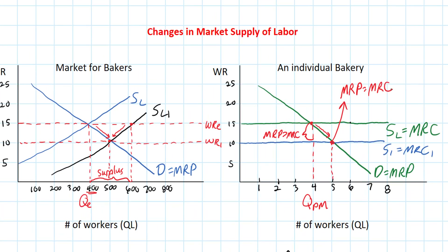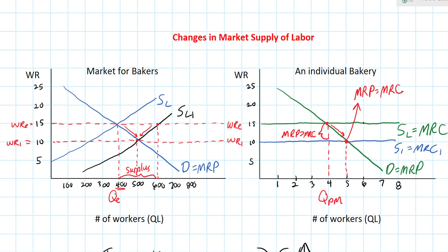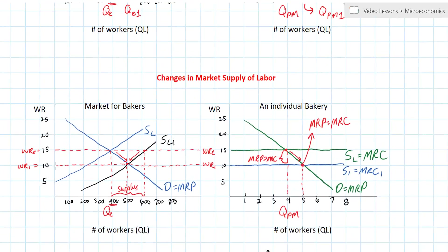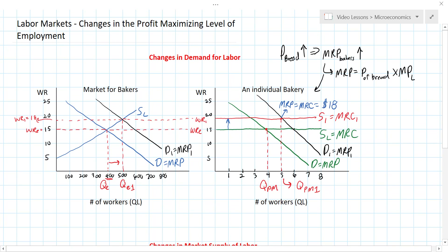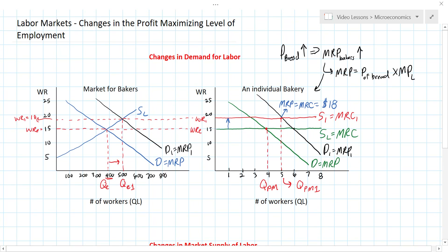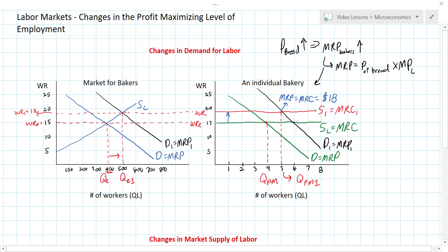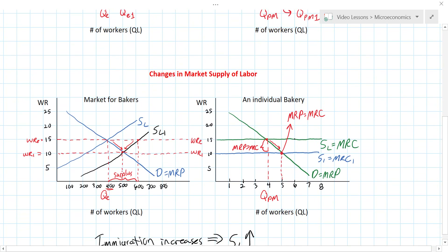So there you have it. An increase in the supply of labor — due to immigration, a decrease in barriers to entry, or falling wages in competing labor markets — will drive down the equilibrium wage rate, and individual employers will wish to hire more workers because the cost of hiring additional workers decreases. The profit maximization rule says you should hire workers up to the point where the cost of an additional worker equals the revenue that worker can earn for you. In this lesson, we covered how changes in the demand for labor among individual firms can affect the market equilibrium wage rate and level of employment, and how changes in the market supply of labor can affect the individual firm's profit maximizing level of employment.